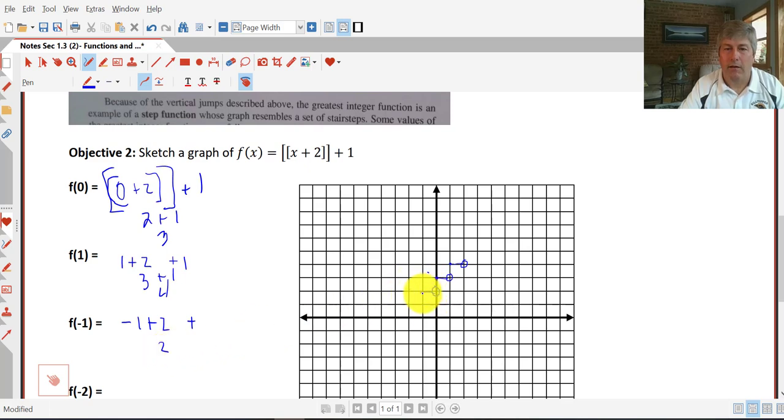Notice again, I start with a closed dot and finish with an open dot. Then negative 2 plus 2 plus 1, we get an output of 1.